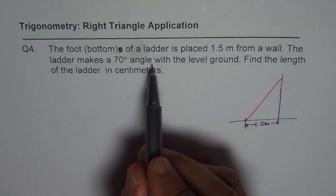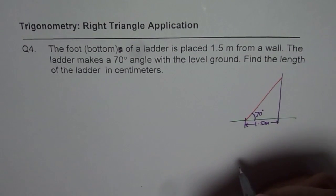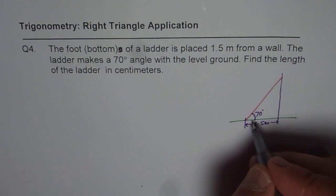The ladder makes 70 degrees angle with the level ground. So with the ground the angle is 70 degrees. At times we will also refer this to elevation angle.